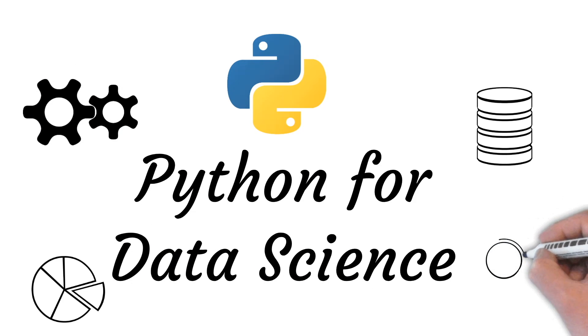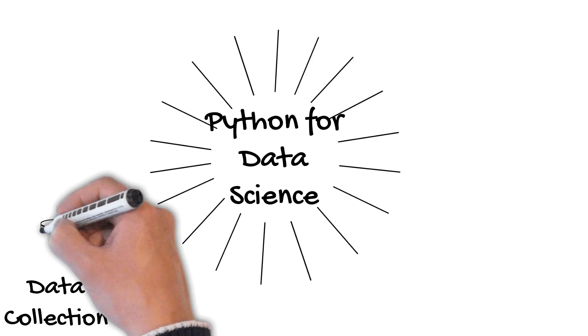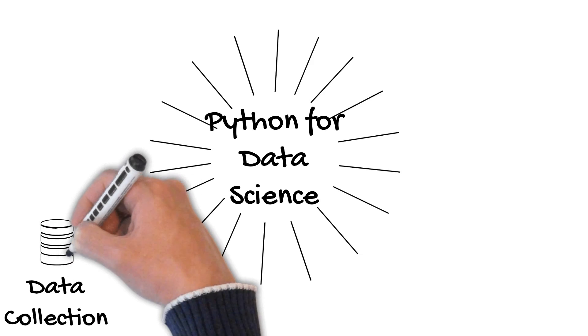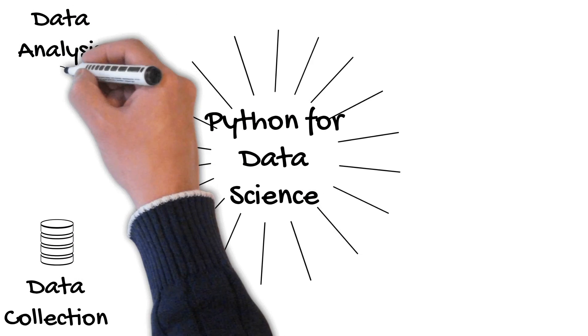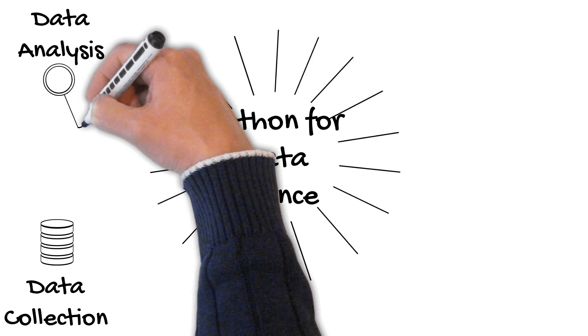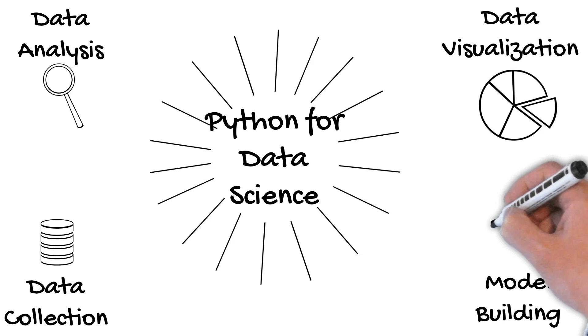When it comes to learning Python for data science, there are four main elements: data collection, where we collect all the data for our project; data analysis, where we clean the data and get insights; data visualization, where we make plots like pie charts and bar plots; and finally model building, which is all about machine learning.